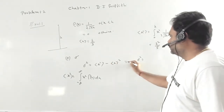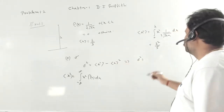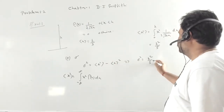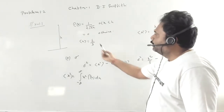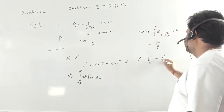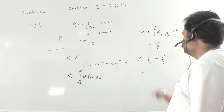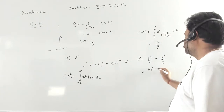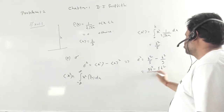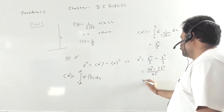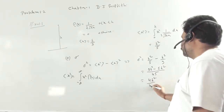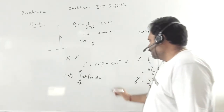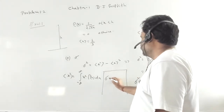Now we can calculate σ². Using σ² = ⟨x²⟩ − ⟨x⟩², we have h²/5 minus (h/3)², which is h²/5 minus h²/9. This gives us (9h² − 5h²)/45, which equals 4h²/45.